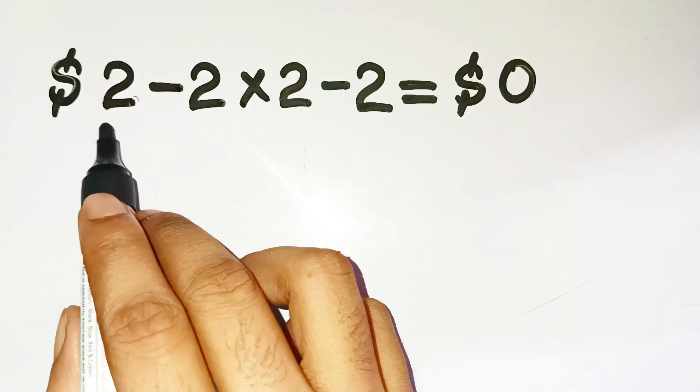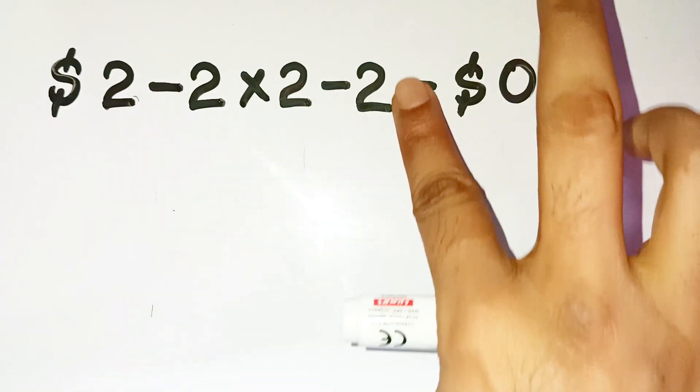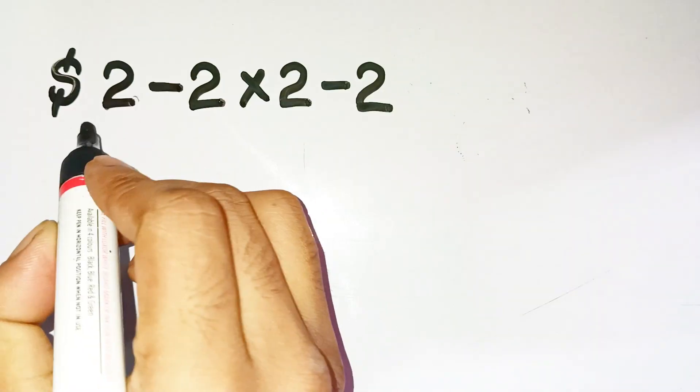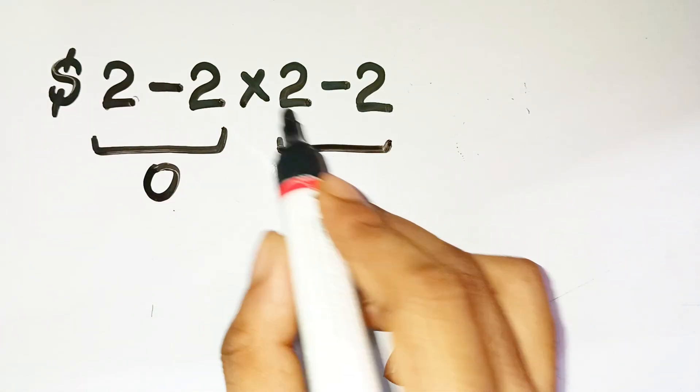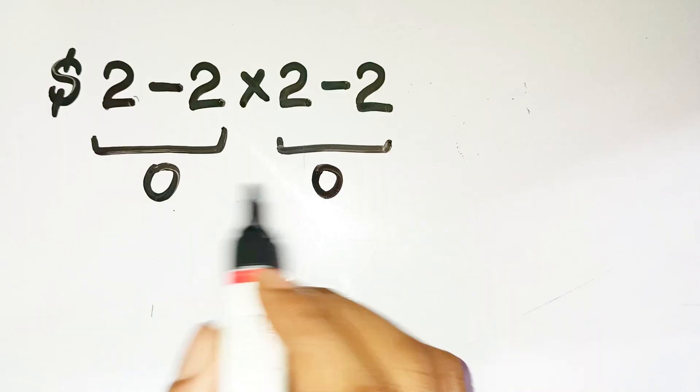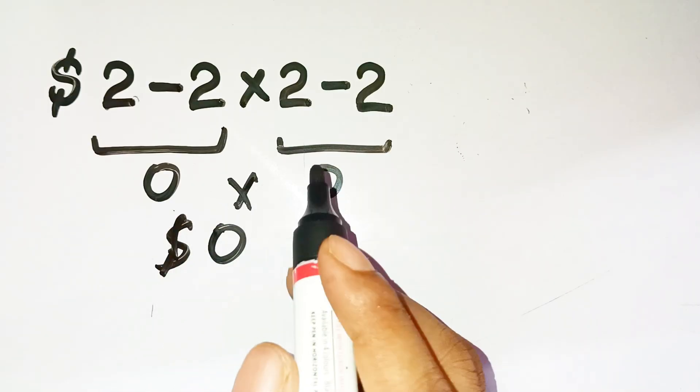The expression is two minus two times two minus two. And almost everyone does this. They go, okay, two minus two is zero, minus two is negative two, times two is zero. Boom, zero dollars. But that's exactly where everyone falls into the trap.